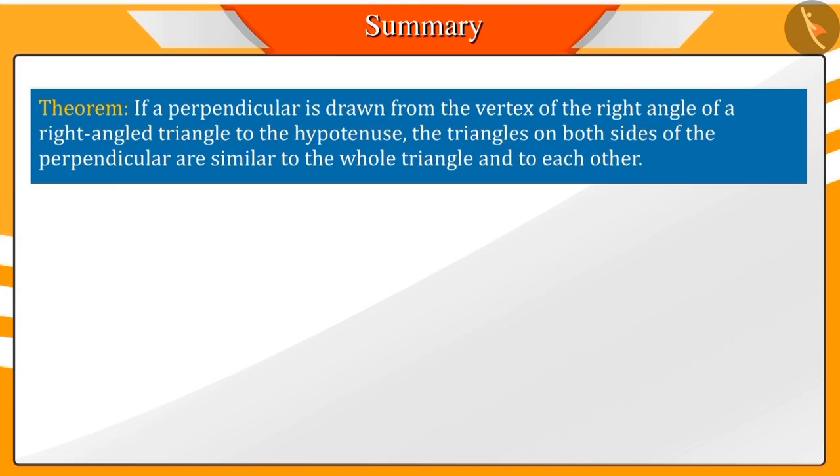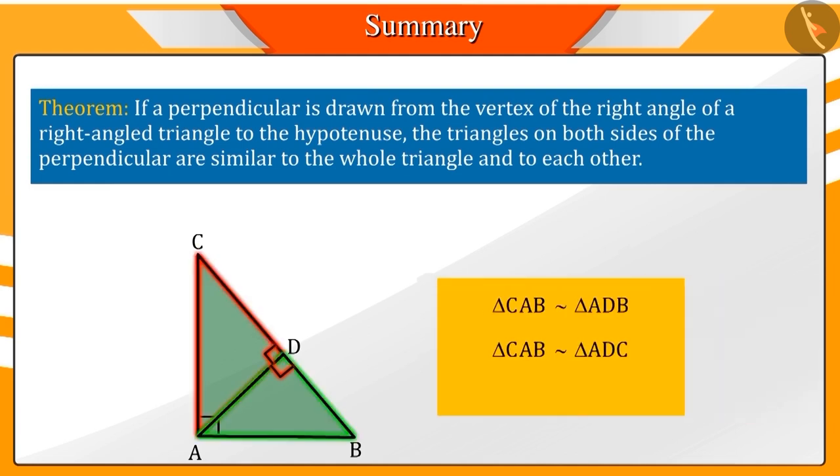In this video, we learned that if a perpendicular is dropped on the hypotenuse from the right-angled vertex of a right-angled triangle, then the triangles on either side of this perpendicular are similar to each other.